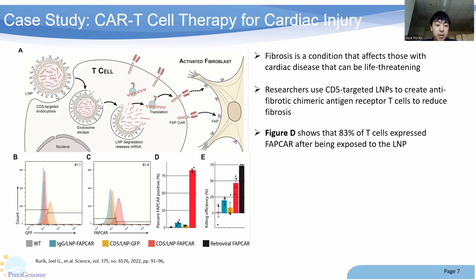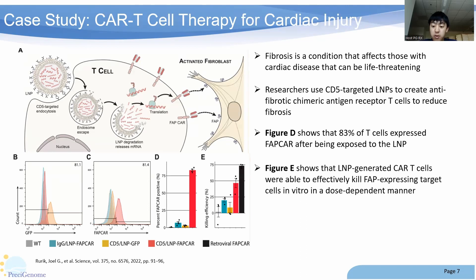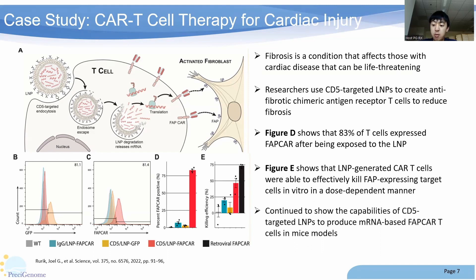You can see in the top left the schematic of how the study was designed. Furthermore, Figure E shows that LNP-generated T cells were also able to effectively kill fibroblast activation protein-expressing target cells in vitro, and in a dose-dependent manner. Because of this success, the research transitioned to in vivo studies using mouse models and were able to continue seeing positive results, once again demonstrating the use of LNPs. This shows another new application of LNPs for gene medicine outside of DNA-RNA vaccines, in the form of CAR T-cell therapy and gene editing.